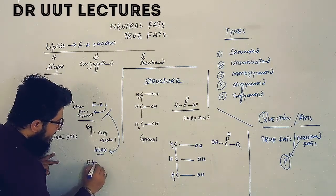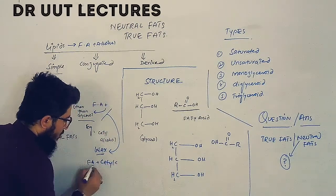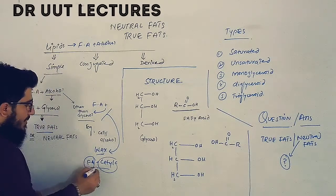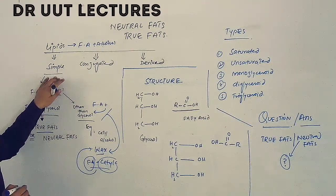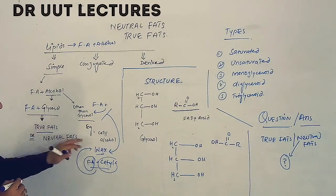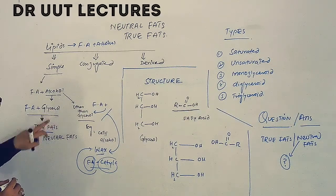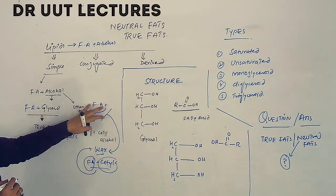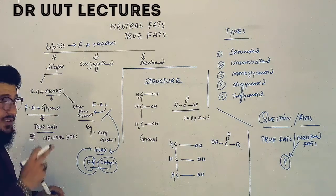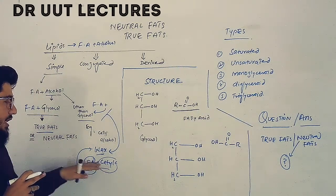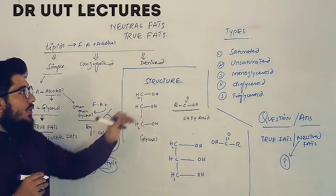For example, if we consider cetyl alcohol as the alcohol other than glycerol, fatty acid and cetyl alcohol combine to produce wax, which is a simple lipid. So the two types of simple lipids — true fats and wax — differ because of the alcohol. Fatty acid plus glycerol gives true fats; fatty acid plus any other alcohol gives wax.